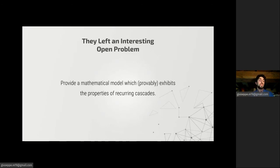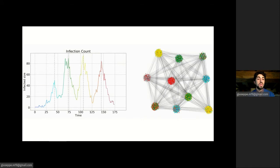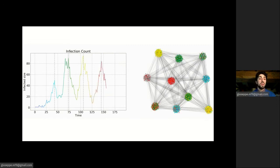The authors left an interesting open problem to provide a mathematical model which provably exhibits the properties of recurring cascades, and this is what we do in our paper. We can see here a simulation of an information cascade in our model of random graph, and different colors are associated with different times at which the nodes get infected for the first time. And we can clearly see that in our model, different communities are associated with different bursts in popularity.